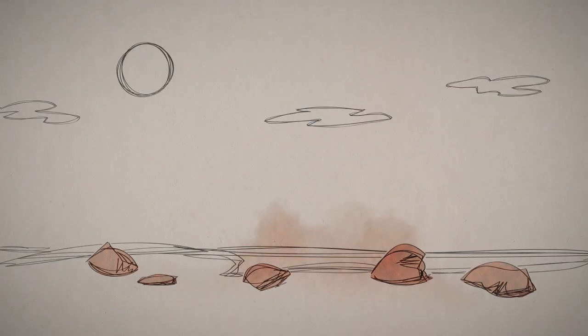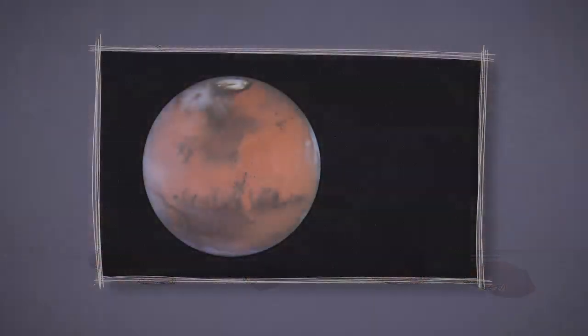When rusty dust from those rocks gets kicked up in the atmosphere, it makes the Martian sky look pink. From a long way away, the whole planet looks kind of reddish.